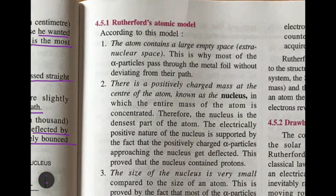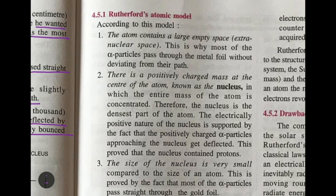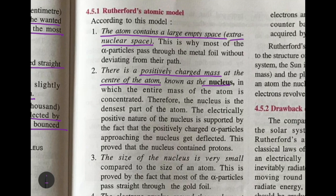Rutherford proposed an atomic model describing the structure of an atom. According to Rutherford's atomic model, the atom contains a large empty space called extra-nuclear space — this is why most alpha particles pass through the metal foil without deviating. There is a positively charged mass at the center of the atom, which he called the nucleus, and it is here that the entire mass of the atom is concentrated, making the nucleus the densest part of the atom.